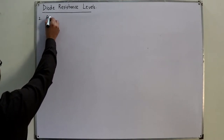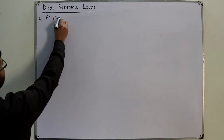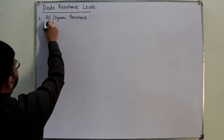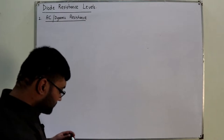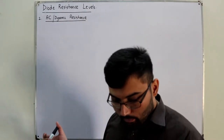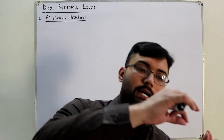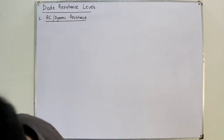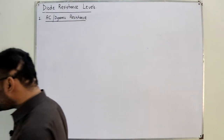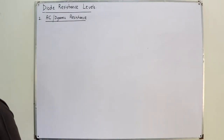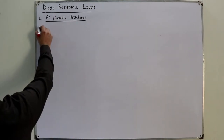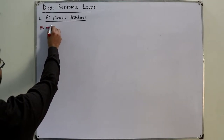The AC resistance is also called dynamic resistance. We've seen that DC resistance does not change with respect to time — take a voltage point, take a current point, the ratio at any value gives you the resistance. But that is not the case here with AC.